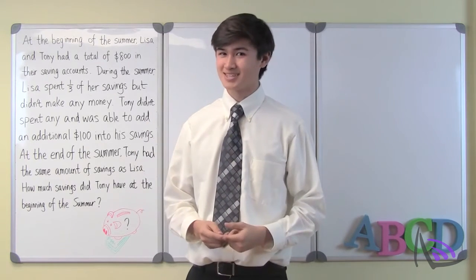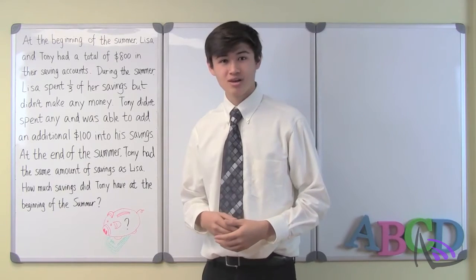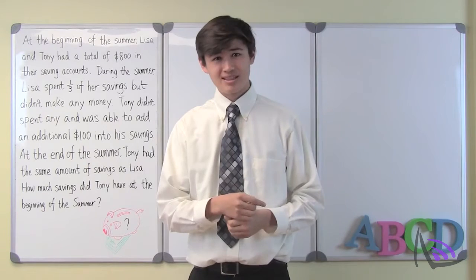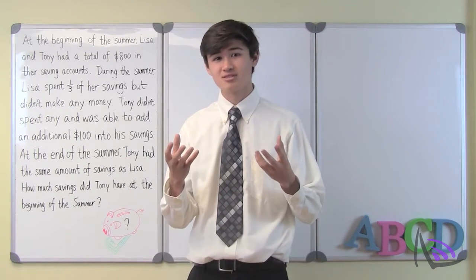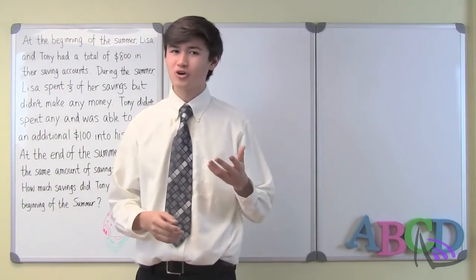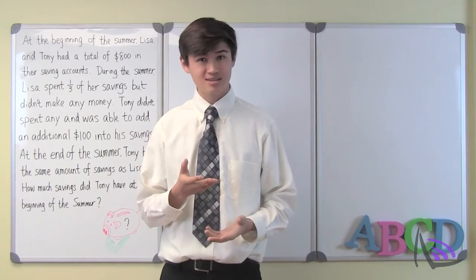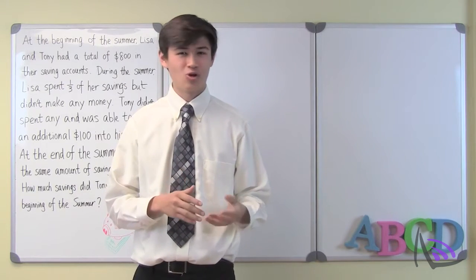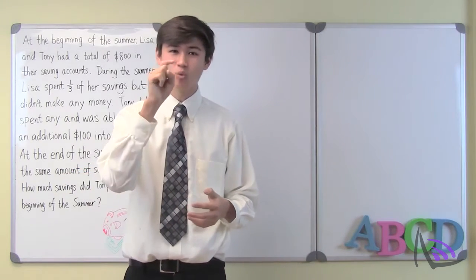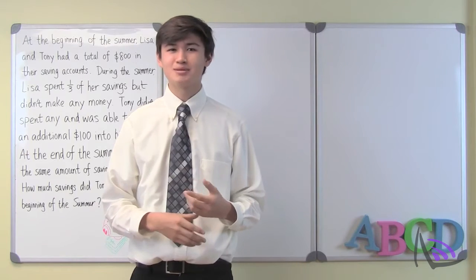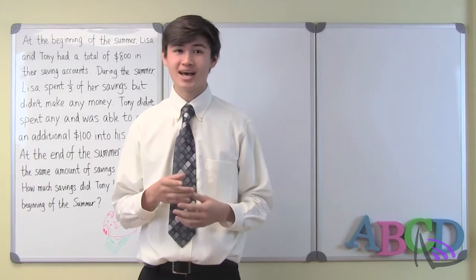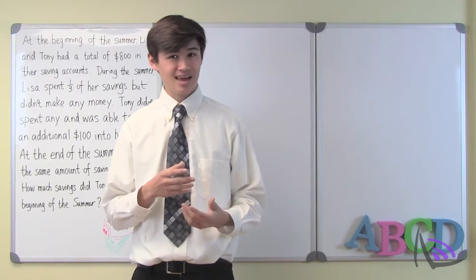Now I can talk to you about Lisa and Tony's wedding and the problem they've asked us to solve. After they got engaged at the beginning of last summer, Lisa and Tony totaled their two savings accounts and found that together they had $800. During that summer, Lisa spent one-third of her savings on her wedding dress but didn't make any money. On the other hand, Tony didn't spend any of his savings and was able to add an additional $100 because he met a generous leprechaun at his bachelor's party.